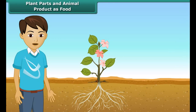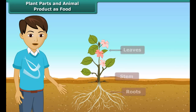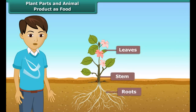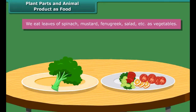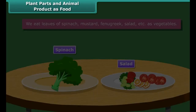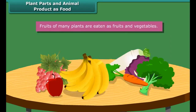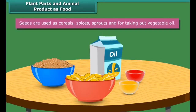Now, as we know that we get most of the food from plants. Various parts of plants give us different types of food. We eat leaves of spinach, mustard, fenugreek, salad, etc. as vegetables. Fruits of many plants are eaten as fruits and vegetables. Seeds are used as cereals, spices, sprouts and for taking out vegetable oil.